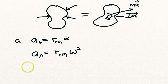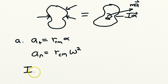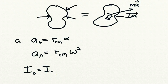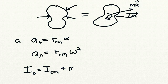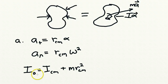We also had the parallel axis theorem, which tells us that the moment of inertia for any point is equal to the moment of inertia about the center of mass, plus m times r squared, where r is the distance between the center of mass and the point we're talking about.